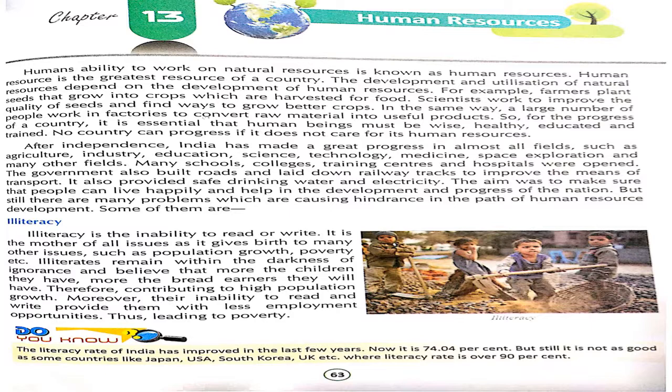Our human beings should be wise, healthy, educated, and trained, because no country can progress without that. After independence, India has made very great progress through all fields — agriculture, industry, and education. There has been a lot of improvement in our means of transport, and we have provided safe drinking water and electricity. The main aim is that everyone can live happily.